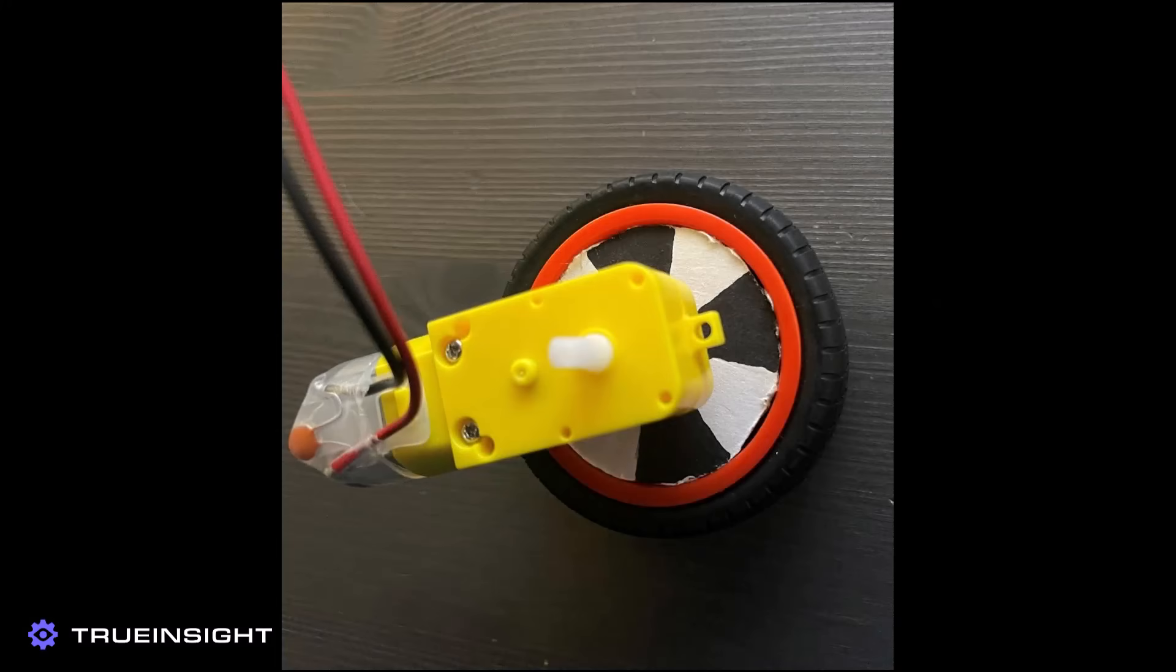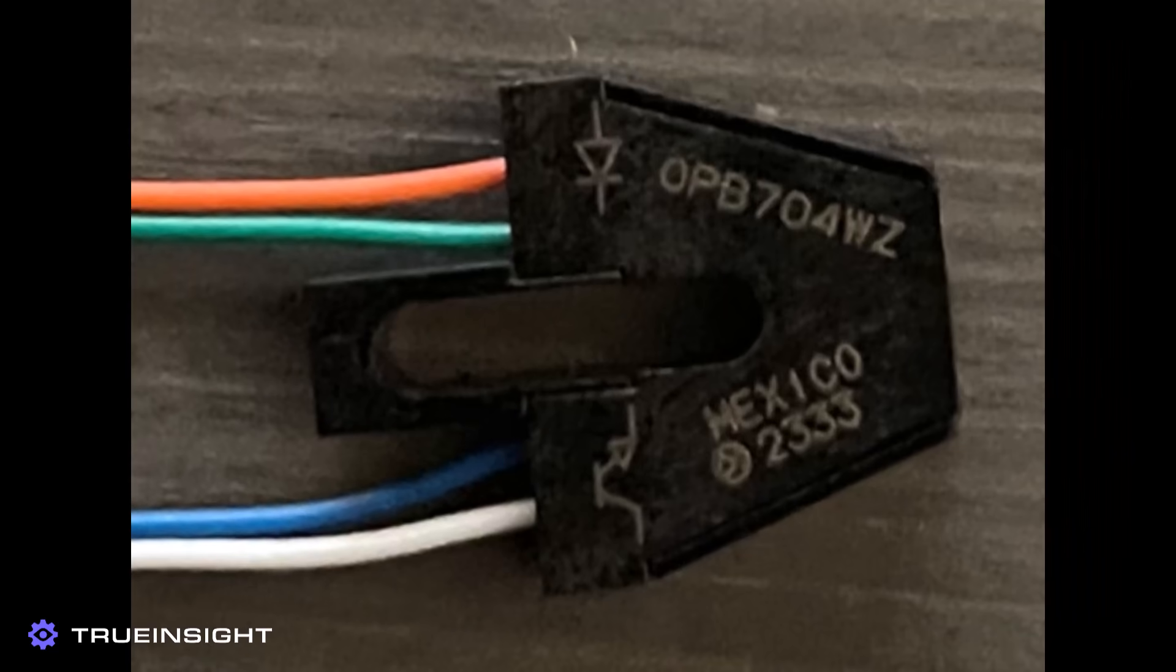First, we added an encoder wheel to the drive wheels, which consist of equally sized dark and light sections. We then positioned an OPB704WZ arrowhead sensor near the encoder wheel so that an oscillating voltage signal could be generated, which could then be converted into a linear speed.